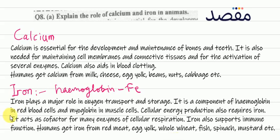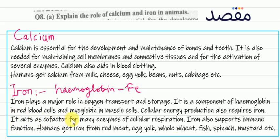Iron is a component of hemoglobin in red blood cells. It is also present in myoglobin, a muscle protein. Cellular energy production also requires iron. Furthermore, iron acts as a co-factor for many enzymes, helping them catalyze reactions.